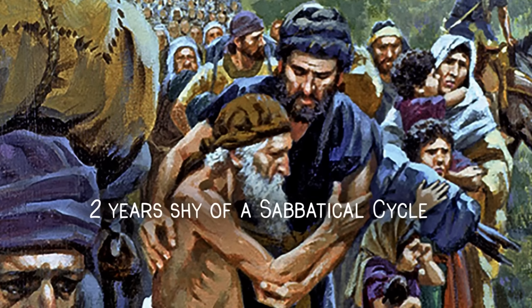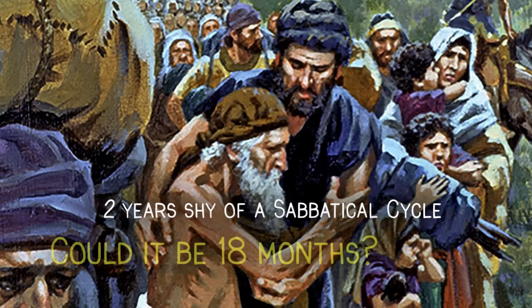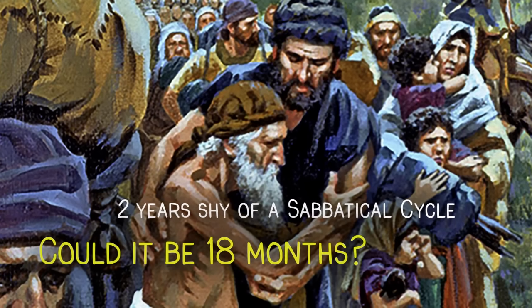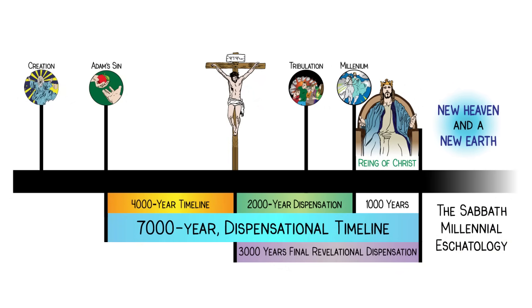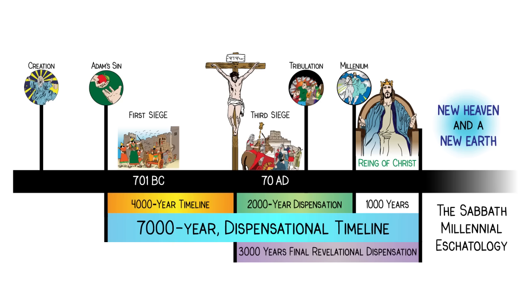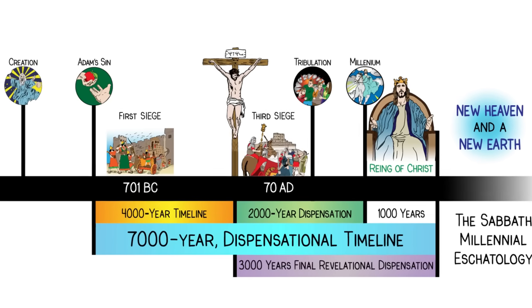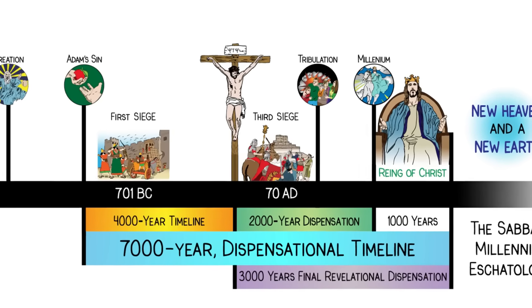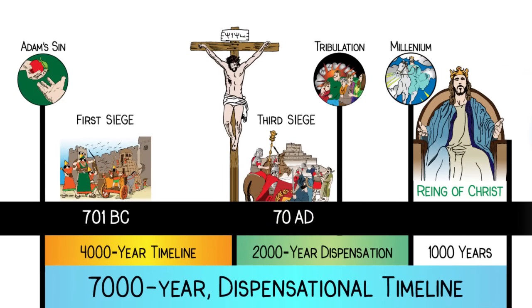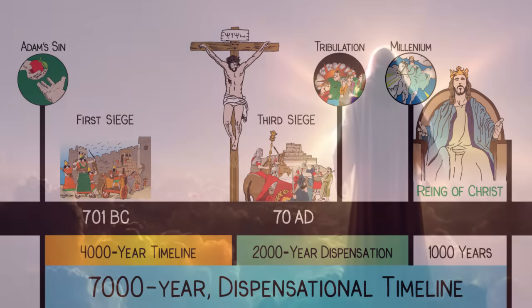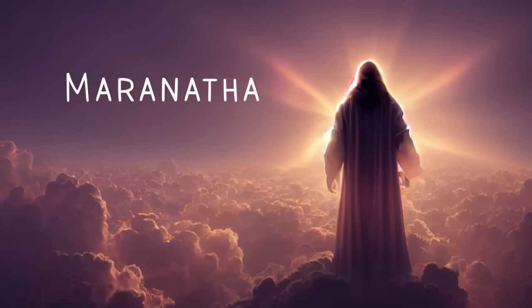2 years? Or could it be 18 months? Well, that's another clue. So let's end this video by putting up our 7,000-year timeline and putting up our first two dates that are the key that, once in place, open the door to filling in all the missing dates on God's 7,000-year timeline for mankind. Stay tuned. And Maranatha!